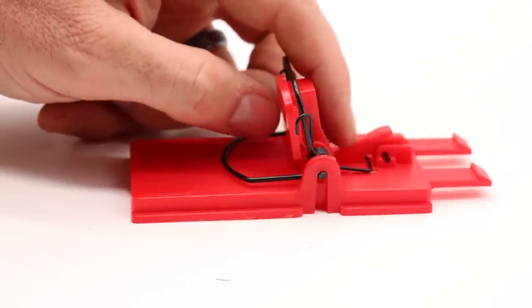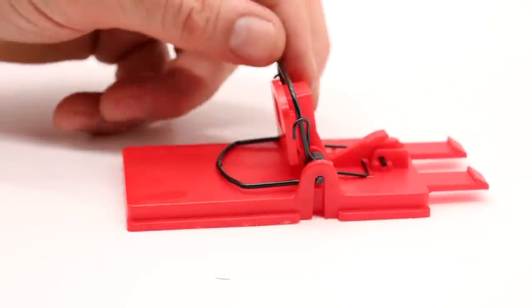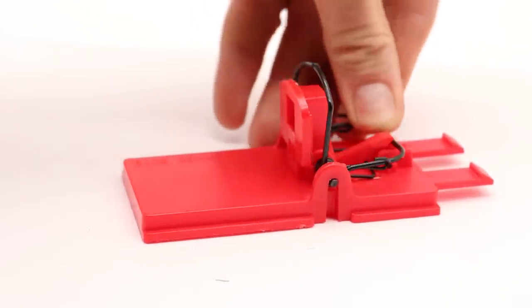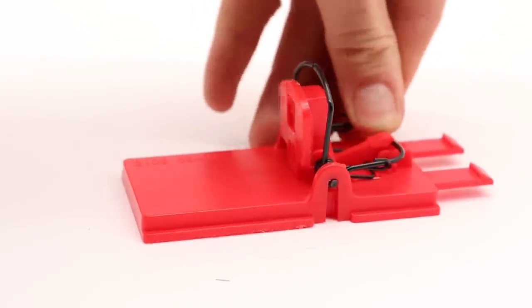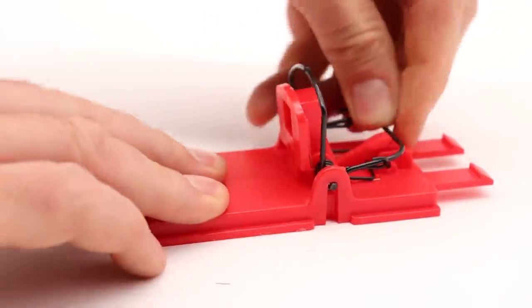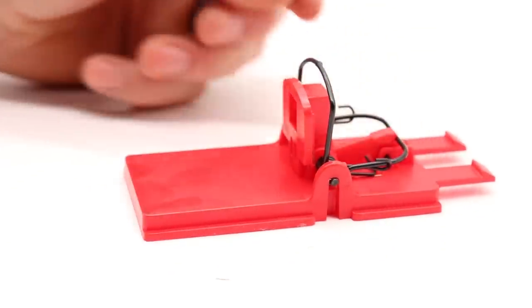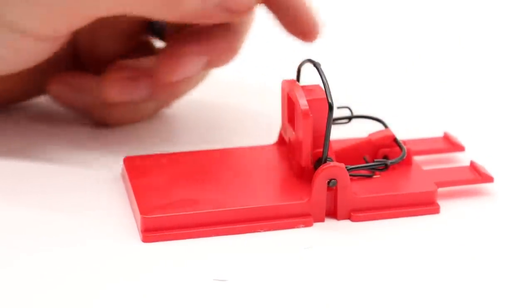Now to set it, what you do is you push the setting mechanism down, push back the kill bar, and it should click into place if you do this right. There we go. So you have to do it with two hands, but now it's all ready.